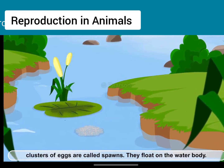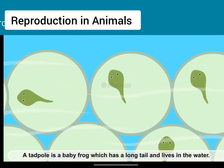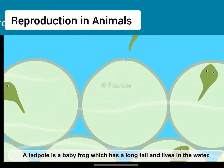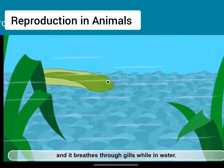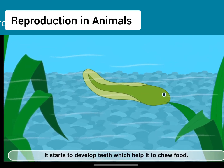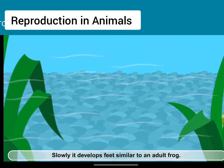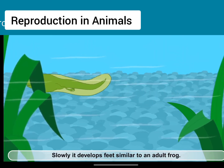Clusters of eggs are called spawns. They float on the water body. A tadpole is a baby frog which has a long tail and lives in the water. A tadpole feeds on the egg yolk and it breathes through gills. While in water, it starts to develop teeth which help it to chew food.